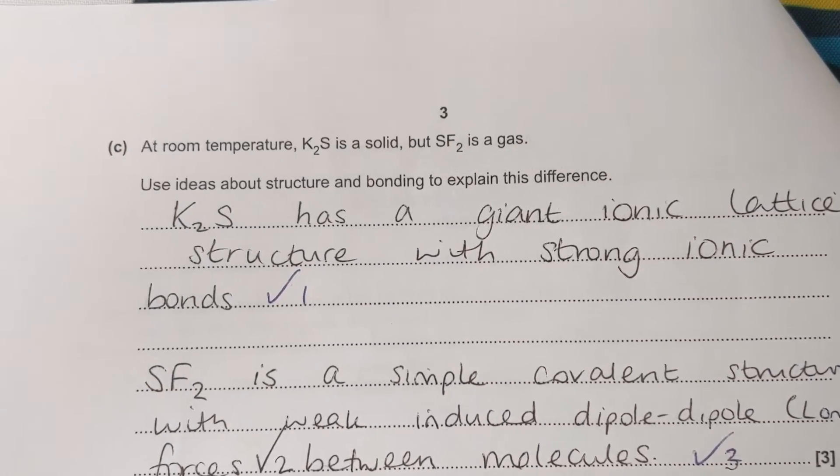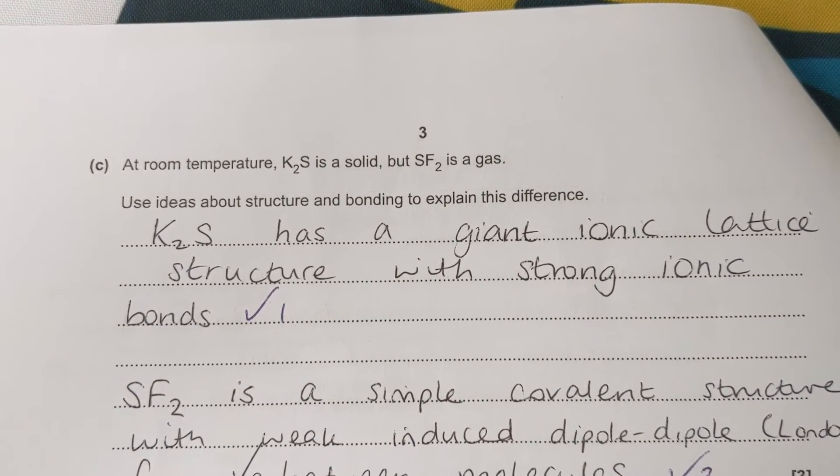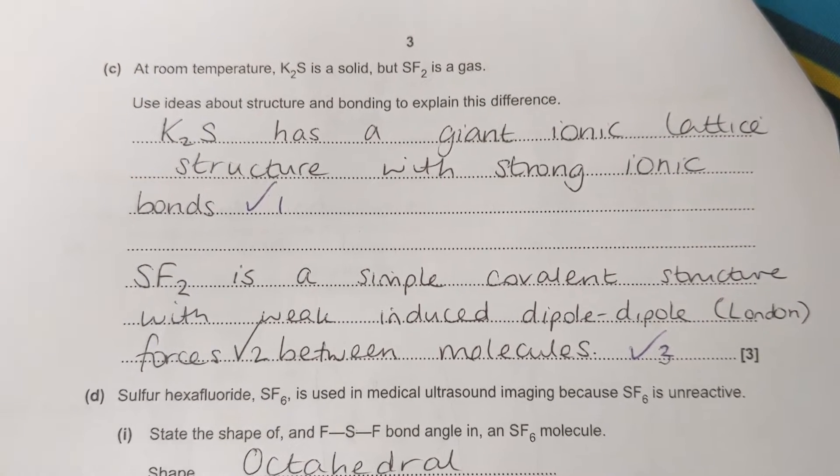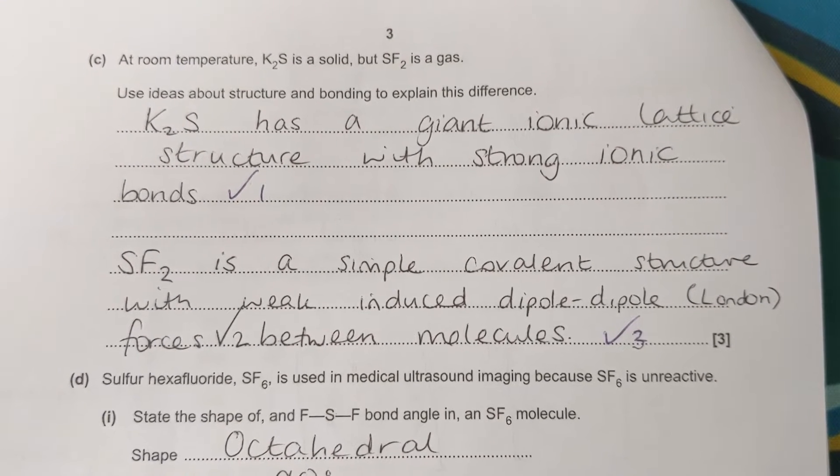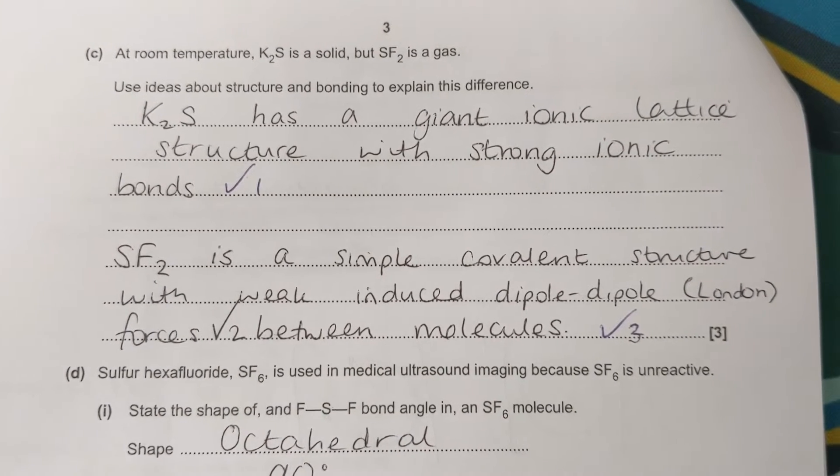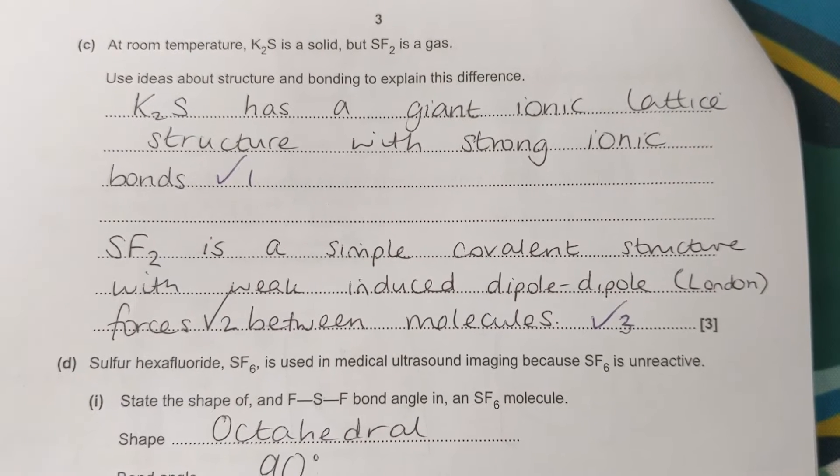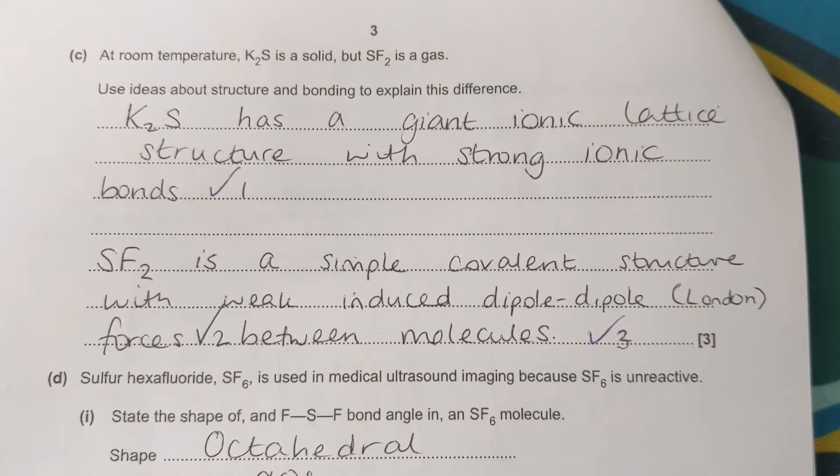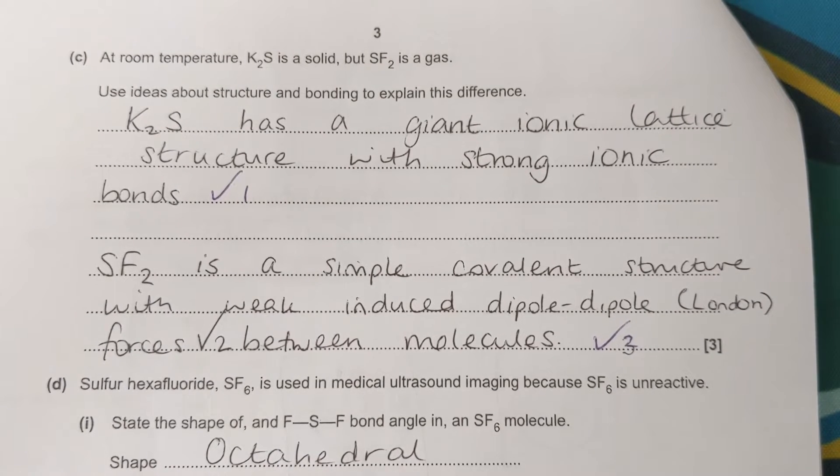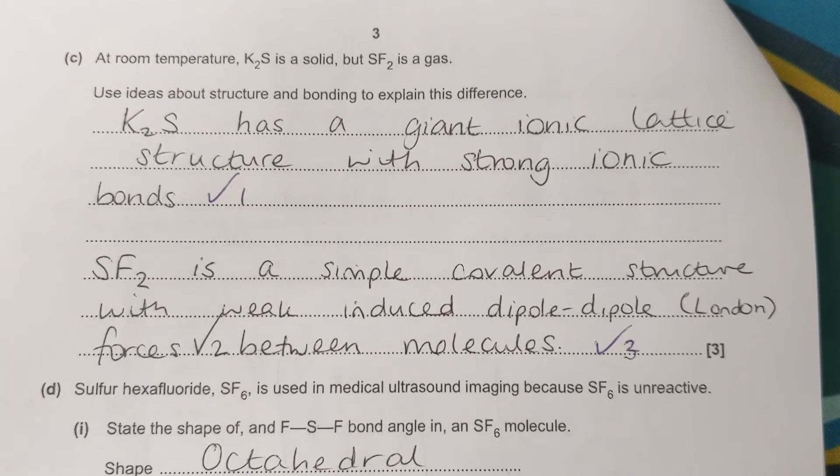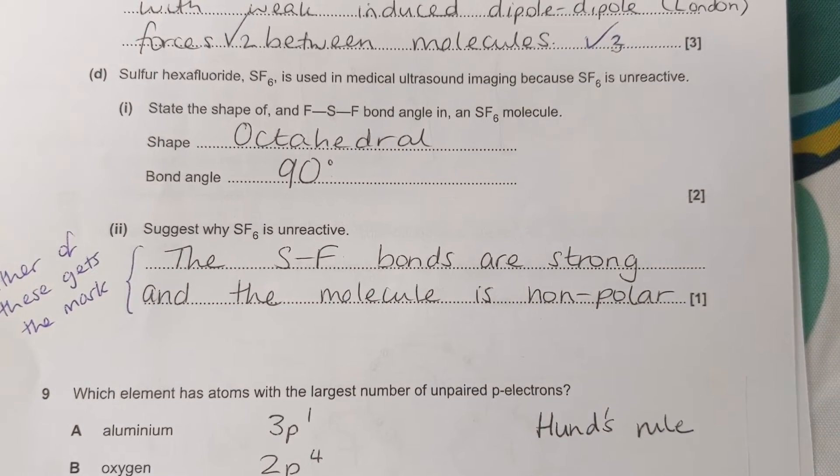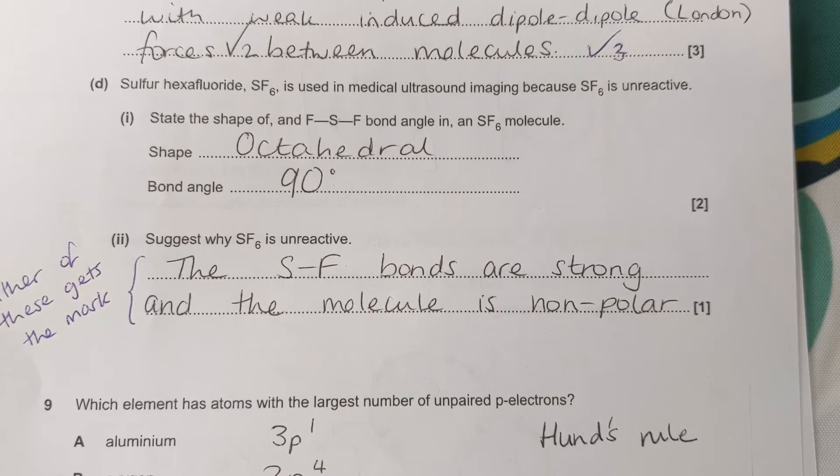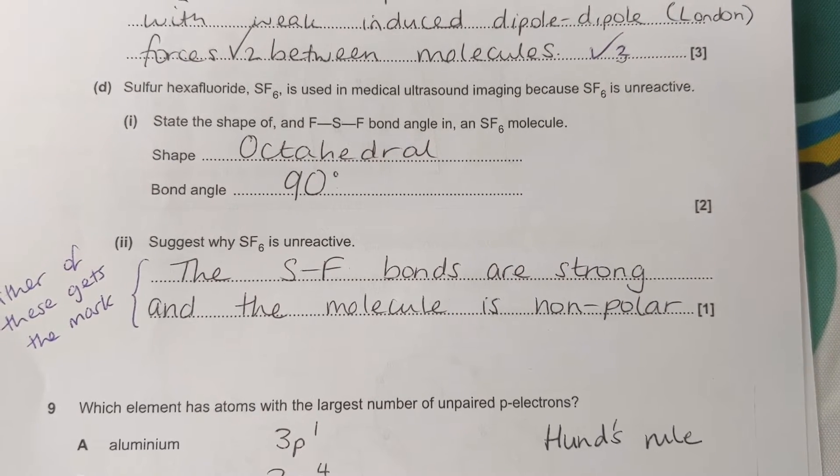Then it's talking about two different substances, one being a solid and one being a gas at room temperature. And it's asking us to explain this using structure and bonding. So potassium sulfide, that's got a giant ionic lattice structure with strong ionic bonds, so it's going to have a higher melting and boiling point. Whereas sulfur difluoride, it's a simple covalent structure. And when we're talking about melting and boiling points here, it's the weak induced dipole forces, so the London forces that have to be overcome in order to melt or boil the substance. And we need to say that these forces are between molecules. The next one, it's asking about SF6. So that's a common example of an octahedral molecule and its bond angles are 90 degrees. So anything with six bonding pairs, zero lone pairs, octahedral 90 degrees.